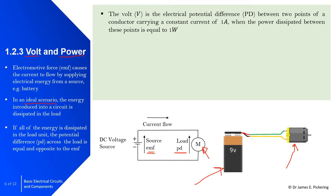The volt, denoted V, is the electrical potential difference (PD) between two points on a conductor carrying a constant current of 1 amp, when the power dissipated between those points is equal to 1 watt. That is effectively the definition of the volt — the potential difference between two points.